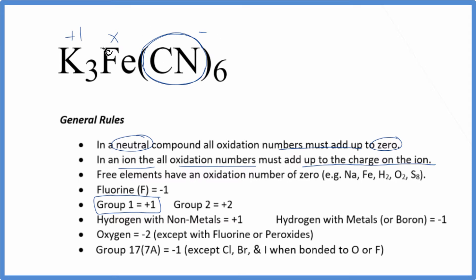So now we can just set an equation up. Three times one, that's three, plus the iron, we don't know that, plus six times this minus one, that's minus six. That equals zero. So we have x minus three will equal zero, add three to both sides, and x equals a positive three.